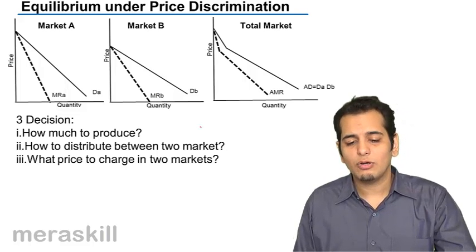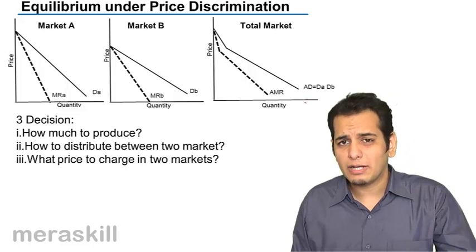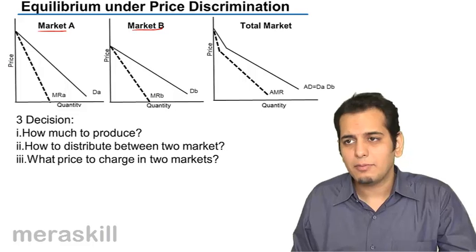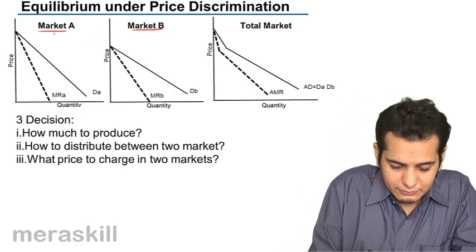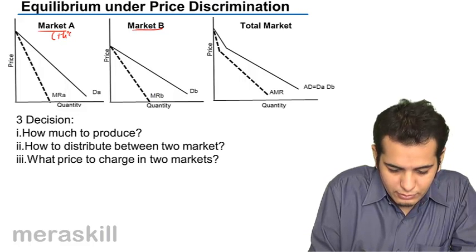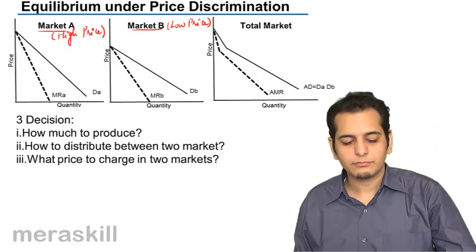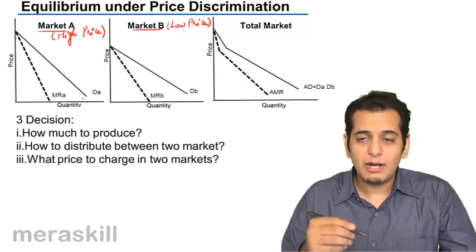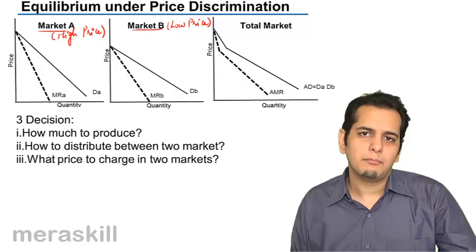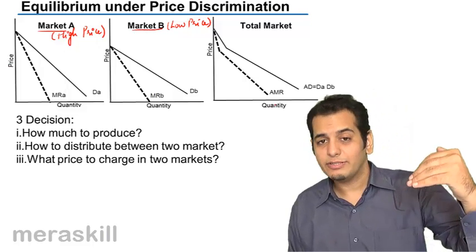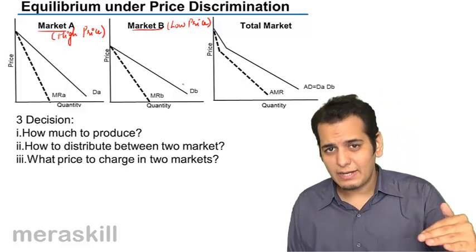Let's see how a monopolist reaches equilibrium under price discrimination. We have two markets: market A and market B. Market A is the high price market and market B is the low price market. The demand curve is relatively inelastic in market A — it is steeper — and the demand curve is relatively elastic in market B — it is flatter.